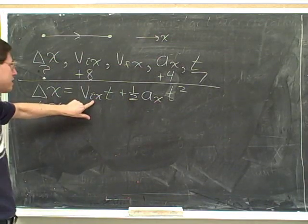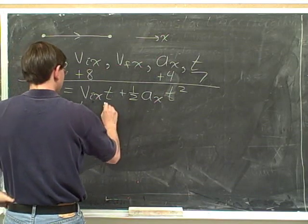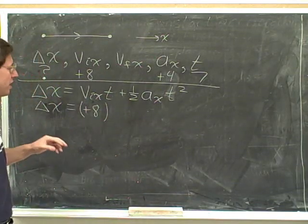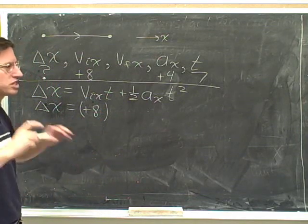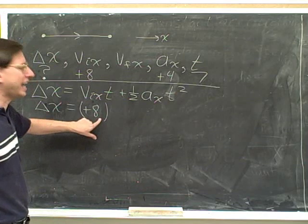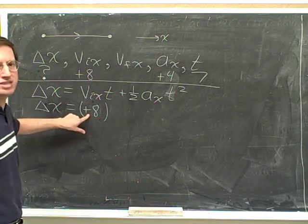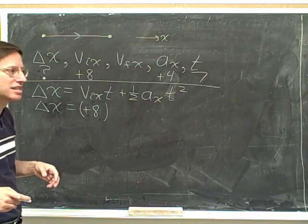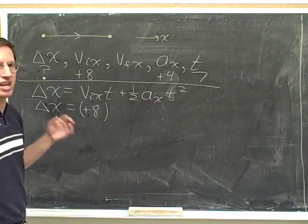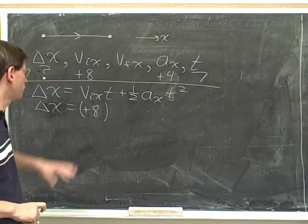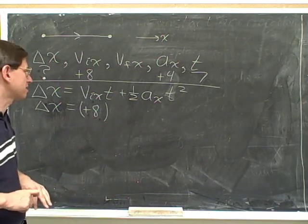What do we plug in for v initial x? Well, positive 8. All right, and here again, I'm going to say something that might seem a little unreasonable at the start, but I hope that you're just going to trust me. Don't just plug in 8. Plug in positive 8. One of the biggest sources of mistakes in physics is mistakes with the signs. And the way we're going to overcome that is to always write the correct sign. So don't plug in 8. Plug in positive 8.